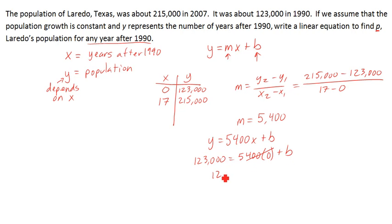This goes away. 123,000 equals b. So my y-intercept is 123,000. So we'll rewrite our equation: y equals 5,400x plus 123,000. Then of course we have to put in the variables they want. They want population and years for x.